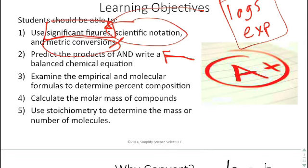We also talked about the difference between an empirical and molecular formula, and we were able to determine the percent composition based on that. And then we were able to calculate the molar mass of compounds. So if I gave you something like HCl and a periodic table, you should be able to tell me what the molar mass of that particular compound is.